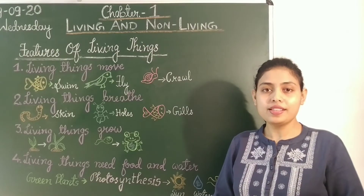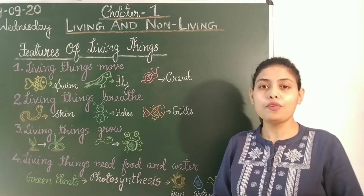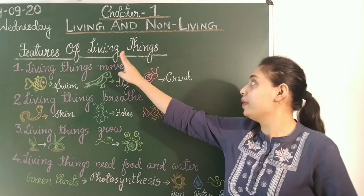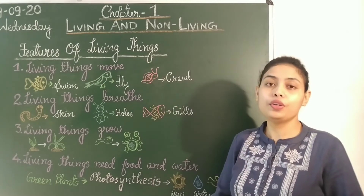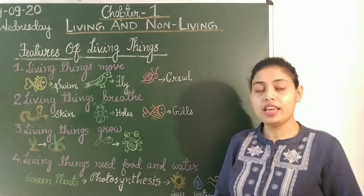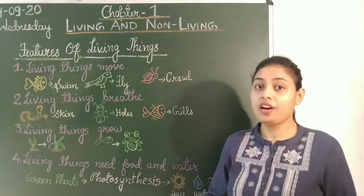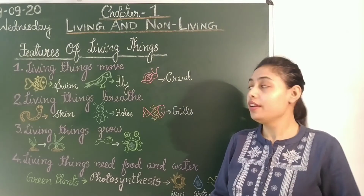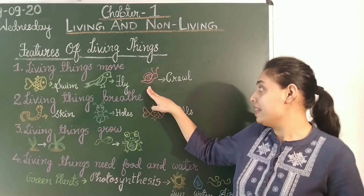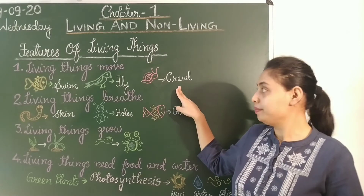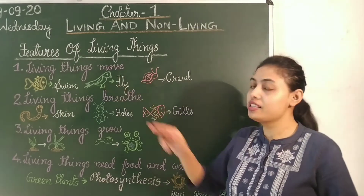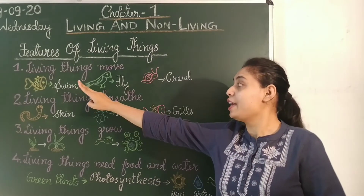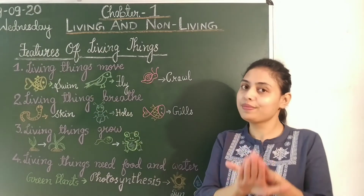Students, now we will study about the different features of living things. Humans and animals can walk, run and jog. Whereas a snail crawls, birds fly, and aquatic animals like fish swim.